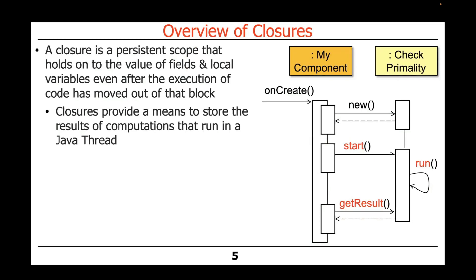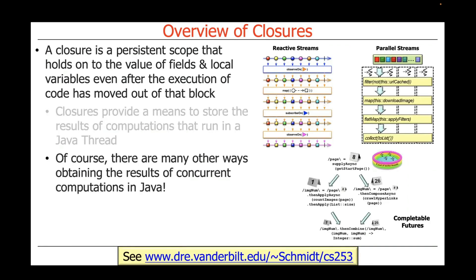Closures provide a means to store the result of computations that run in a Java thread, among many other things. We'll take a look at an example of this shortly, where you can start up an object that has a closure, run the closure in the context of a thread, and then get the results later after things have finished executing. Naturally, there are many other ways of obtaining the results of concurrent computations in Java above and beyond the example I'm showing here.